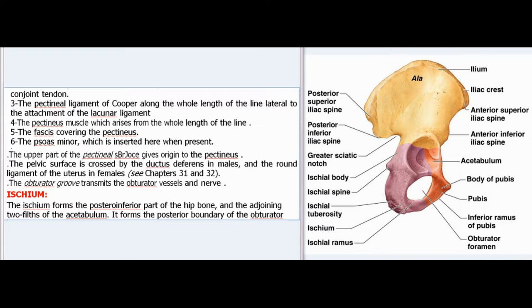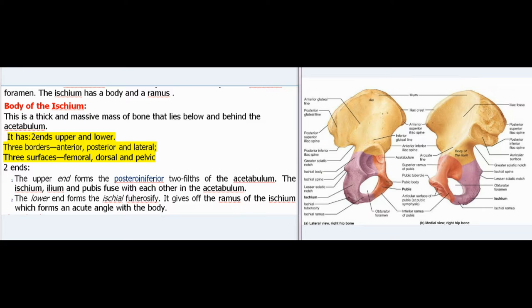The ischium forms the posteroinferior part of the hip bone and the adjoining two-fifths of the acetabulum. It forms the posterior boundary of the obturator foramen. The ischium has a body and a ramus. The body of the ischium is a thick and massive mass of bone lying below and behind the acetabulum. It has two ends (upper and lower), three borders (anterior, posterior, and lateral), and three surfaces (femoral, dorsal, and pelvic). The upper end forms the posteroinferior two-fifths of the acetabulum; the ischium, ilium, and pubis fuse with each other in the acetabulum. The lower end forms the ischial tuberosity and gives off the ramus of the ischium, which forms an acute angle with the body.